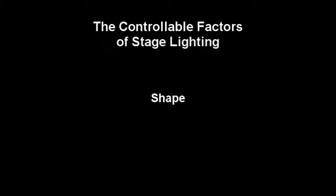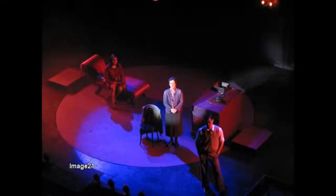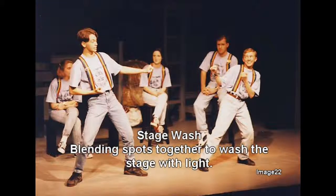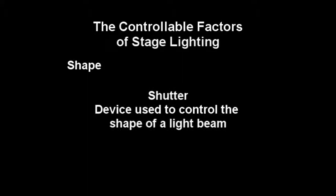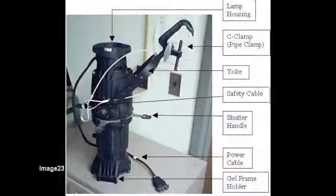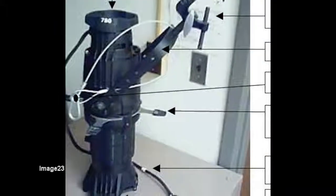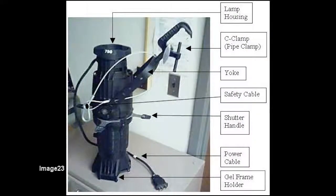Another of the important controllable factors of stage lighting is the shape of the light. The standard shape that a light beam takes is a round spot, so that individual spots can be blended together to create what is referred to as a stage wash. But there are times when the shape of a light must be changed for either technical or aesthetic reasons. One of the ways to control the shape of light is through the use of shutters. Some instruments, like the ellipsoidal spotlight, have shutters installed in the instrument themselves, typically used to change the shape of the spot so that the light will not spill onto an element of the stage in a distracting way.